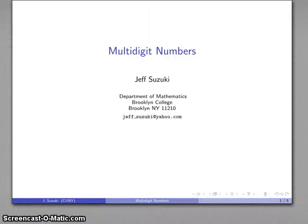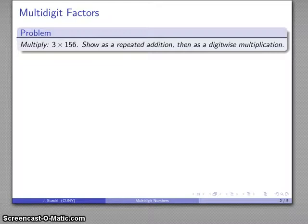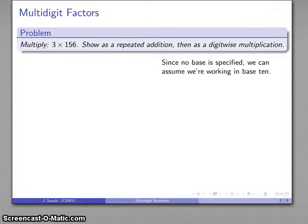All right, so let's take a look at multiplication of multi-digit numbers using base 10. So for example, we might take the product 3 times 156, and we'd like to show this both as a repeated addition, and then for the purposes of building up our standard algorithm, we want to see that as a digit-wise multiplication.